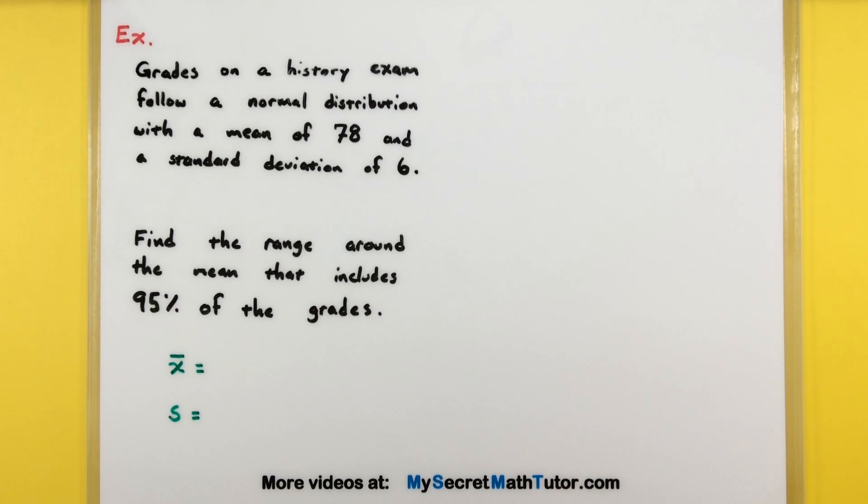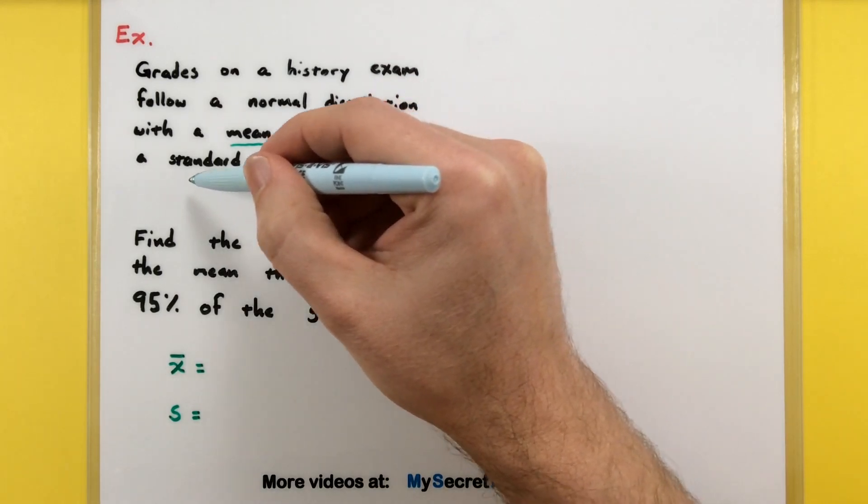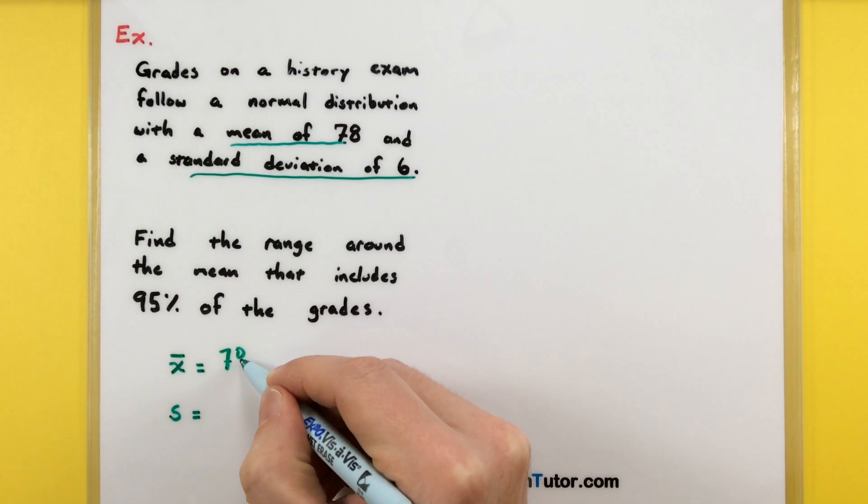Our goal is to find the range of values around the mean that include 95% of the grades. It's a good idea to identify key bits of information like the mean and the standard deviation. Our mean is 78 and our standard deviation is 6.